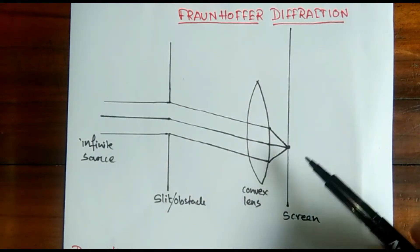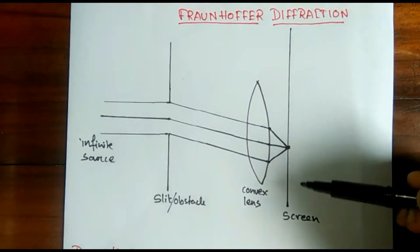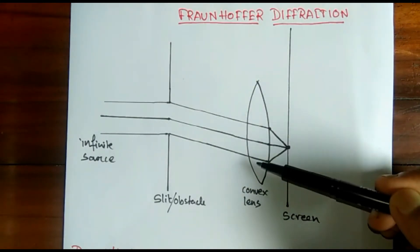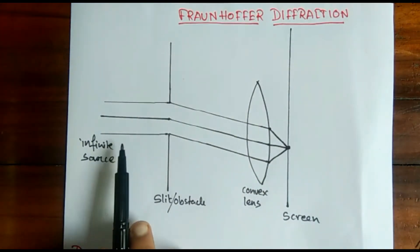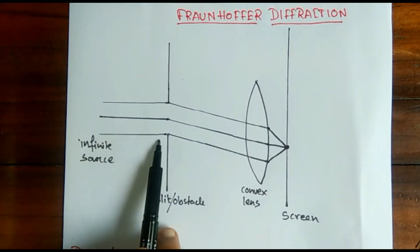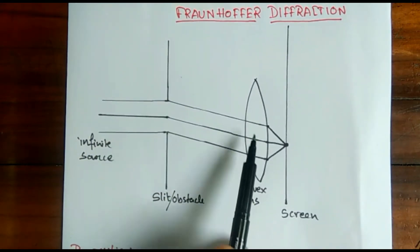That is why we use a convex lens here. When we pass any ray of light through the obstacle and it passes through the convex lens, the light rays converge at a point.